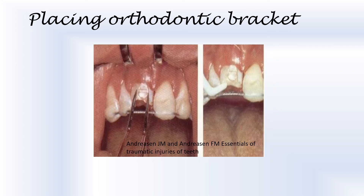The next step is placing an orthodontic bracket on the labial surface of the intruded incisor. In the area where elastic traction is to be exerted, a coil spring is placed in order to prevent slippage of the elastic.